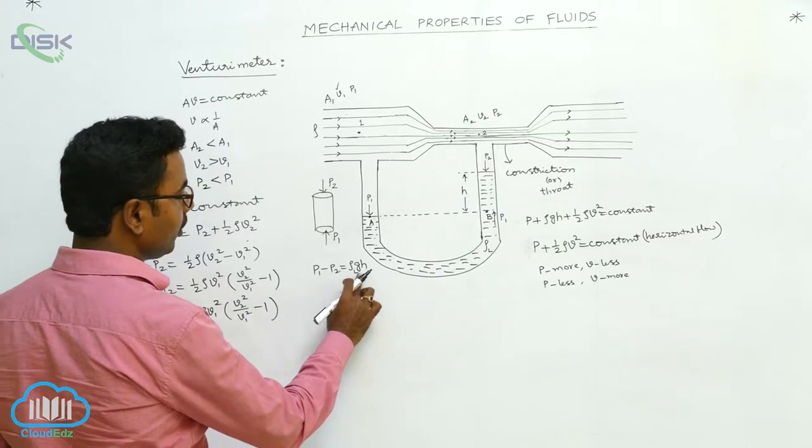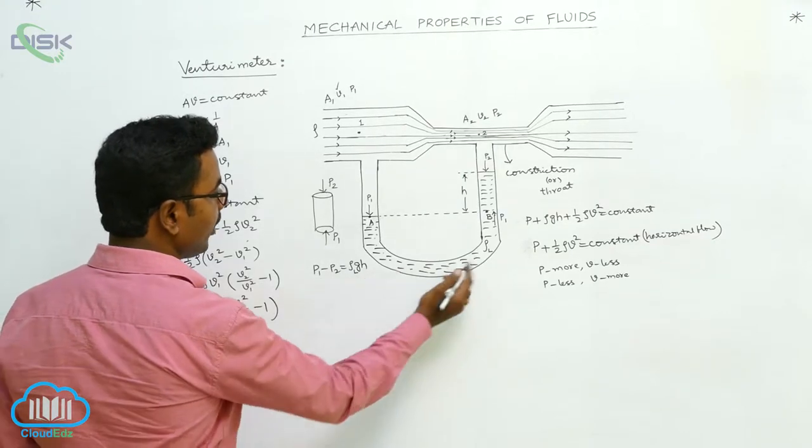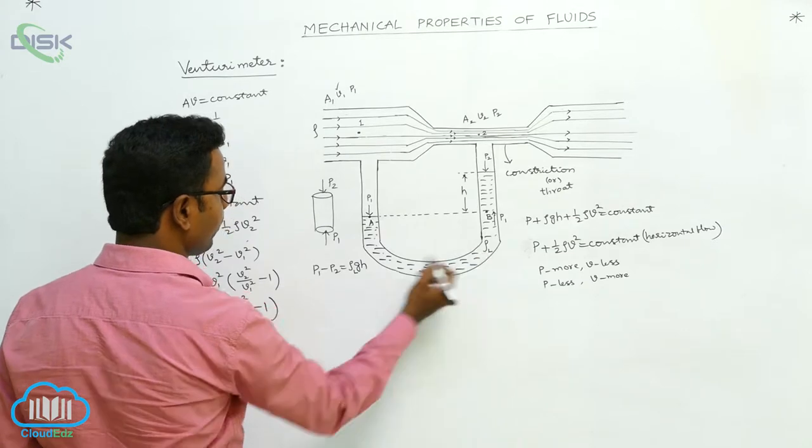P1 minus P2 is equals to rho L into GH. Why rho L here? Here density of liquid is rho L into GH.